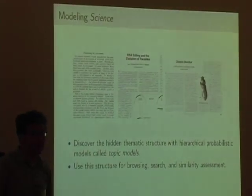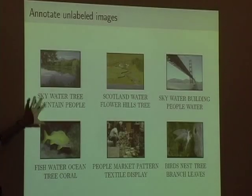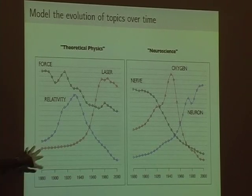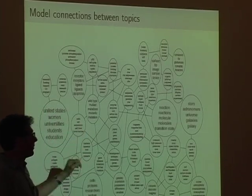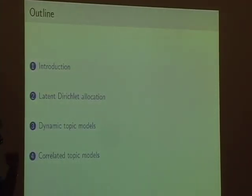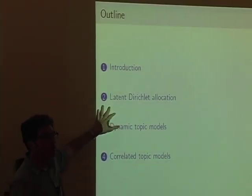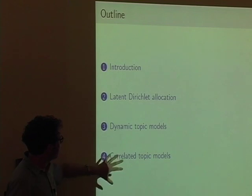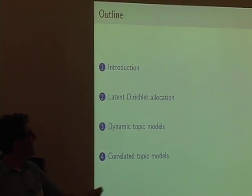People want to take articles from the 1800s and the 1950s and understand where they sit in the broader setting. Topic models can automatically discover topics from a collection of documents, automatically label previously unlabeled images, model the evolution of topics over time, and model the way topics — these groups of words that go together — relate to each other. Today I'll introduce Latent Dirichlet Allocation, then extend it to dynamic topic models, and briefly discuss correlated topic models.